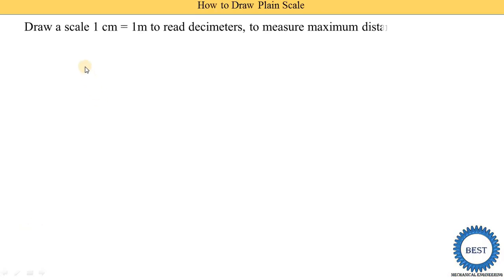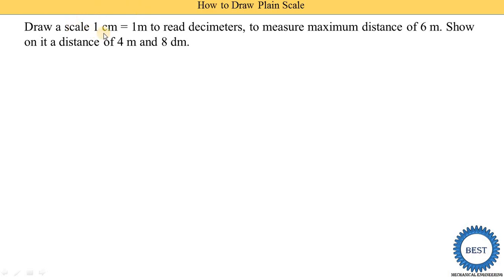Draw a scale where 1 centimeter is equal to 1 meter. Using this data, we can find the representative fraction to read decimeters, with a maximum distance of 6 meters. On the scale, we need to indicate a distance of 4 meters and 8 decimeters, meaning two units are involved.